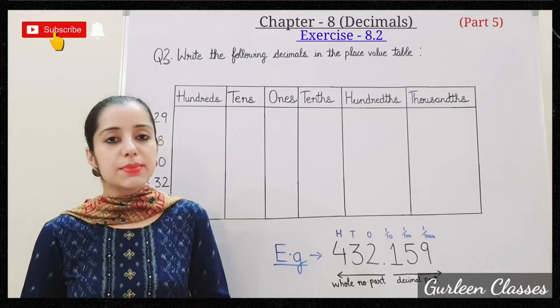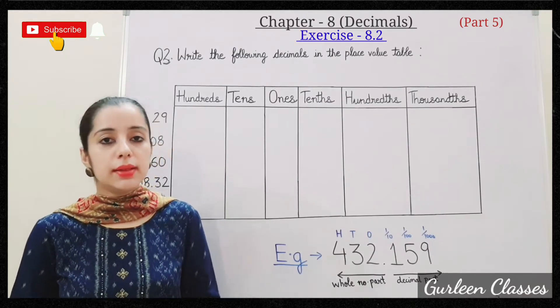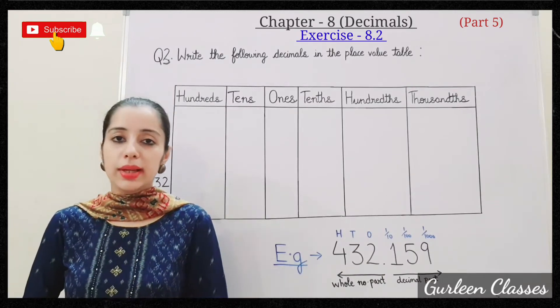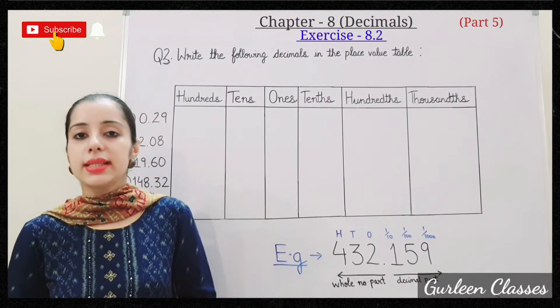Write the following decimals in the place value table. So here you can see the place value table. Let me give you all one example.